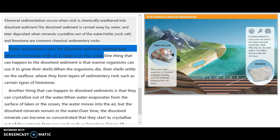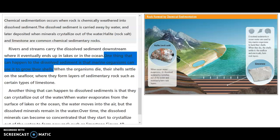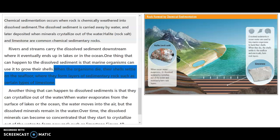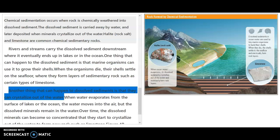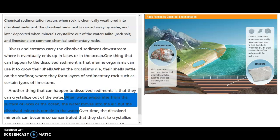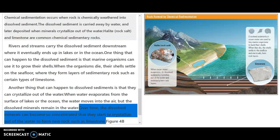So rivers and streams carry the dissolved sediment downstream where it eventually ends up in lakes or in the ocean. One thing that can happen to the dissolved sediment is that marine organisms can use it to grow their shells. When those organisms die, their shells settle onto the seafloor where they form layers of sedimentary rock as certain types of limestone. Another thing that can happen to dissolved sediments is they can crystallize out of the water. When water evaporates from the surface of the lakes or the ocean, the water moves into the air, but the dissolved minerals remain in the water. Over time the dissolved minerals can become so concentrated that they start to crystallize out of the water and form new rock such as limestone.